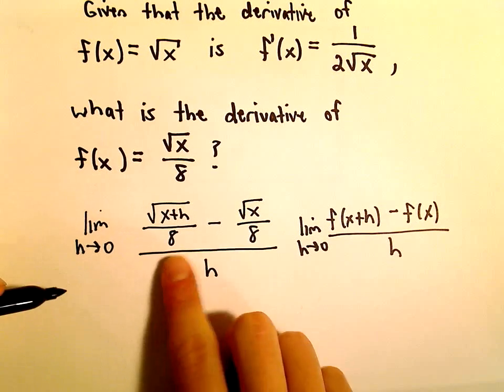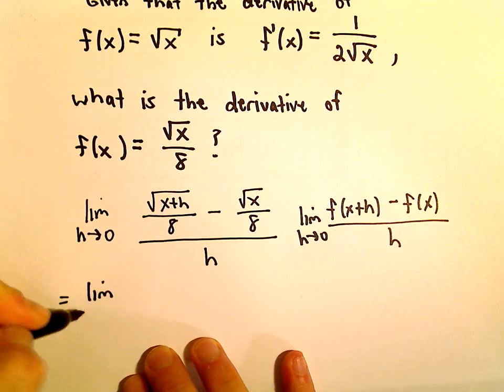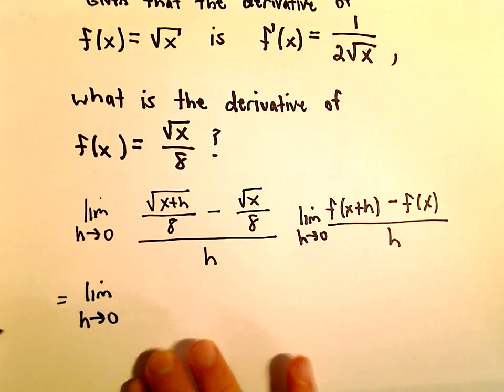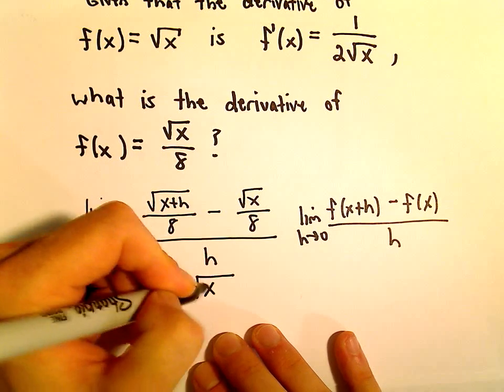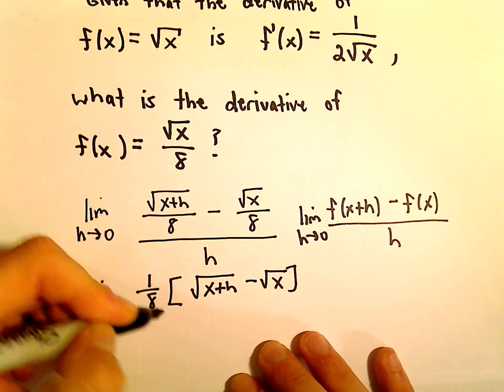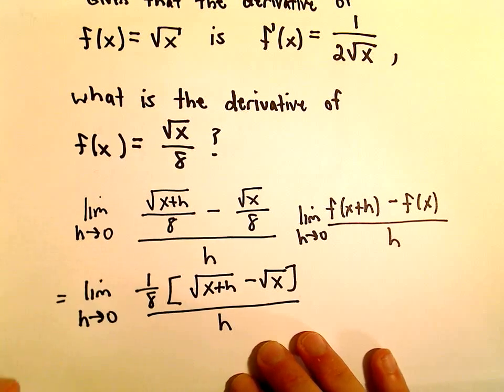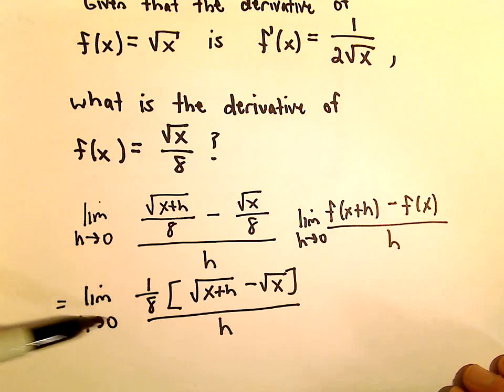Well, notice what we could do is, in the numerator, we could factor that 1 eighth out. We could just pull the 1 eighth out, and then we would have 1 eighth times the square root of x plus h minus the square root of x all over h. And the idea here is that the limit depends on h.